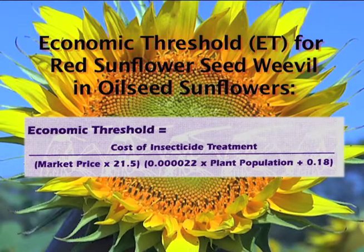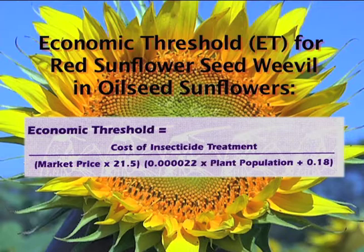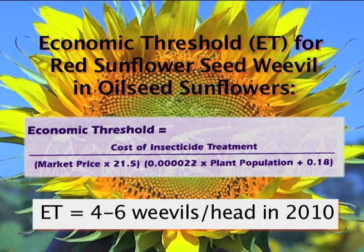To decide whether to use insecticide to control the red sunflower seed weevil, it's necessary to determine the economic threshold for this year. The economic threshold is based on the cost of insecticide per acre, the market price of sunflower in dollars per pound, and the plant population per acre. Using the cost of insecticide between eight and ten dollars per acre, the economic threshold is near four to six weevils per head this year.